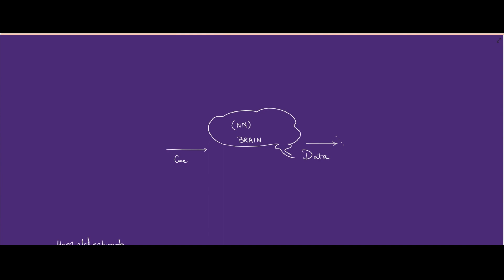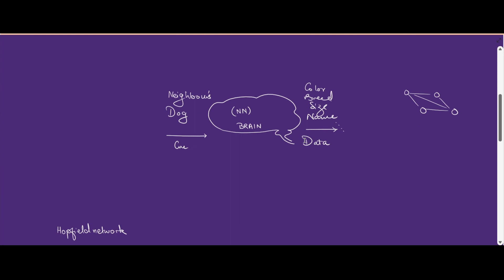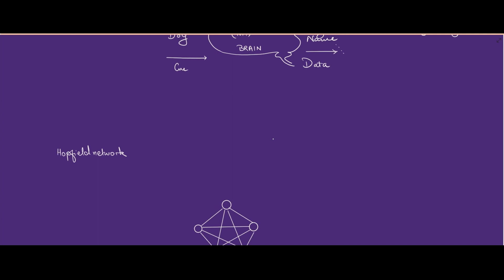Let us think of the brain as a neural network where we have a set of neurons, denoted by circles, which are interconnected to each other by what are called synapses. To the brain we usually give a cue, and then we retrieve the data stored in the brain. For example, the cue the brain receives could be 'neighbor's dog,' and the brain will process this cue and give you the data of the color, breed, size, and name.